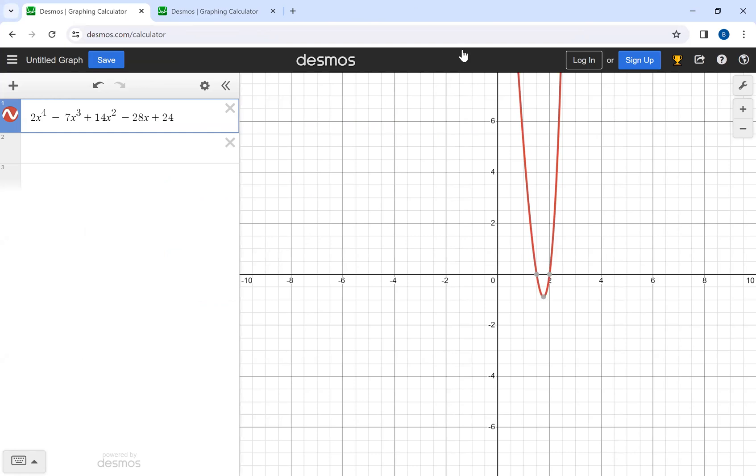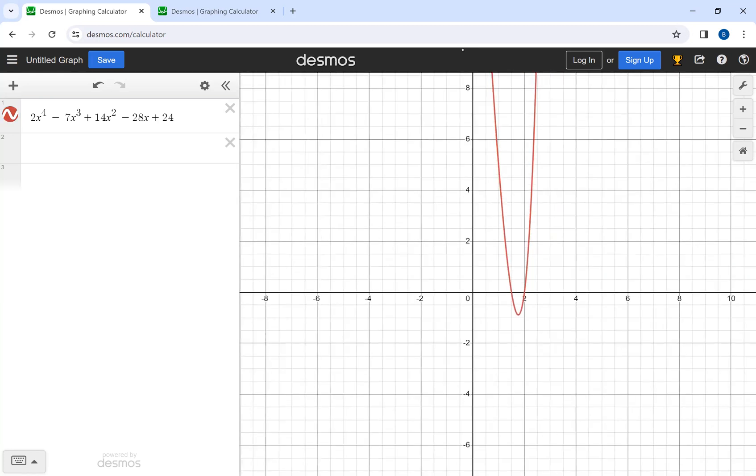And the one that I'm using is desmos.com/graphing. And you're going to enter our polynomial so we can graph it. And if you notice, we're going to look where we have x-intercepts. Remember, x-intercepts are zeros, are roots, are solutions. It says that we have one at 2,0. We have one at 1.5, 0. So this tells us our first number, well, two numbers to plug in to our synthetic division. You can use either one you want. But you're going to start with one of them. So again, I graphed my function. And I'm looking for x-intercepts, where we cross the x-axis.